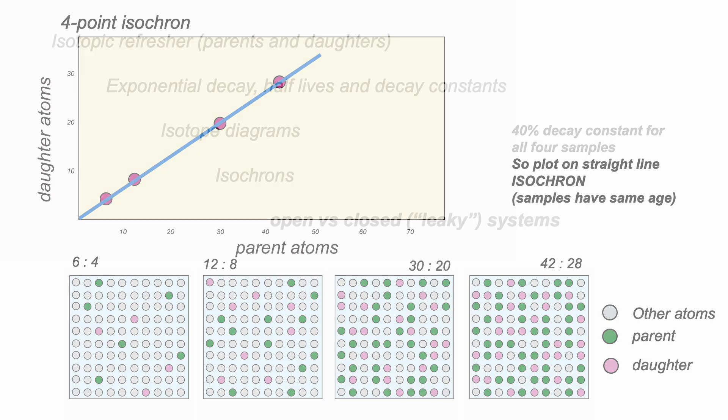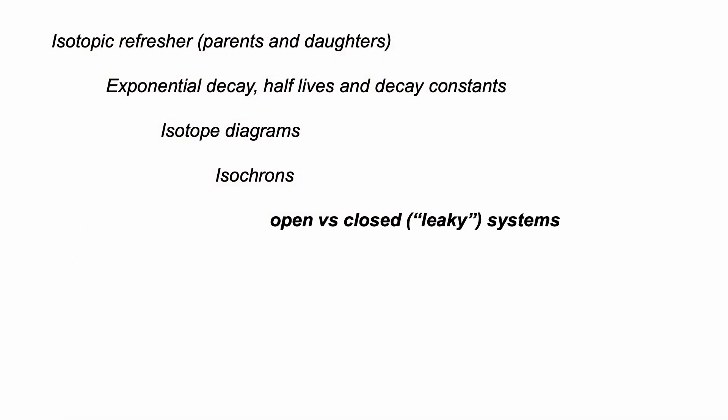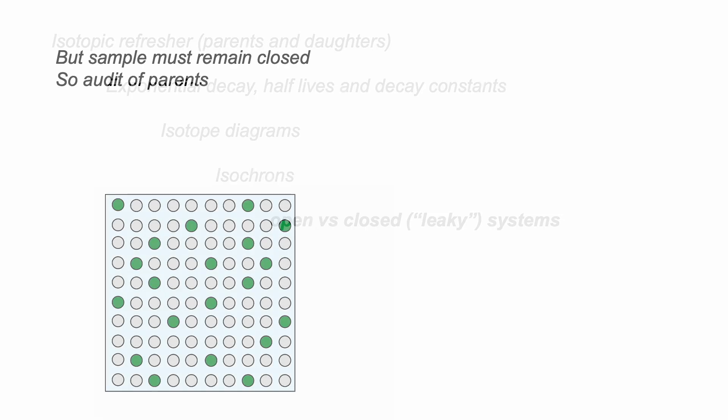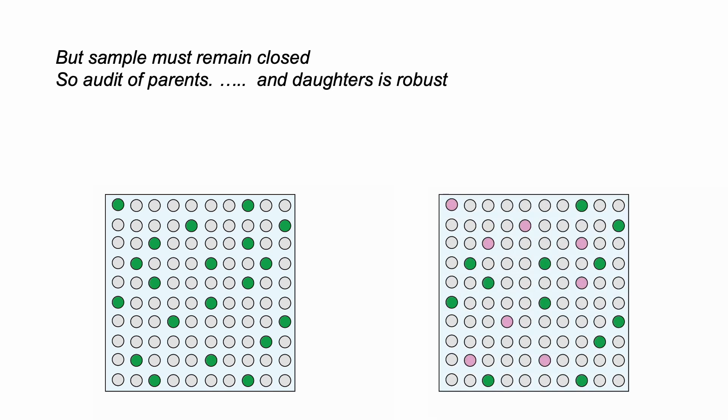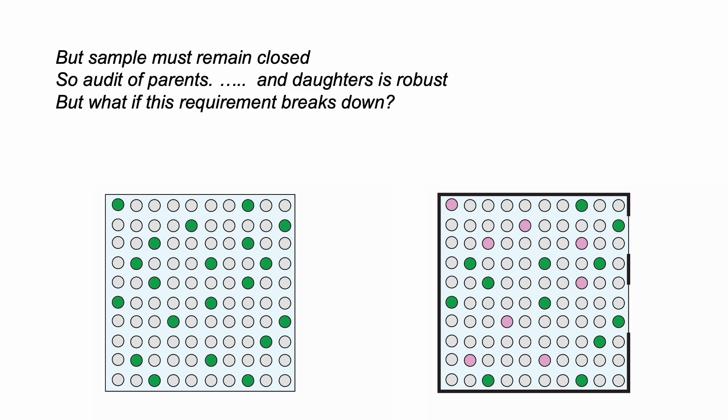Before we move on to get nearer a real situation, we need to discuss a requirement of the approach, which is, throughout its history, during the decay, each sample has to be closed. So we can perform a robust audit of the numbers of parent and daughter atoms. The rock, or a constituent mineral we're analysing, has to have been closed.